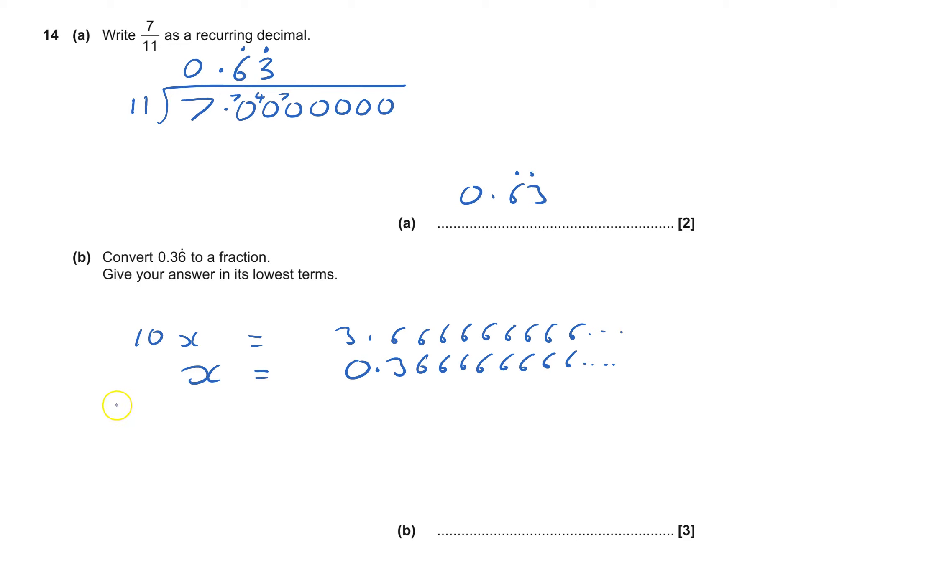So I subtract these and that will give me 9x equals - all these ones will cancel out - and it will just leave me with 3.6 minus 0.3, which will be 3.3. So that says that x, which I want to work out, is 3.3 over 9.